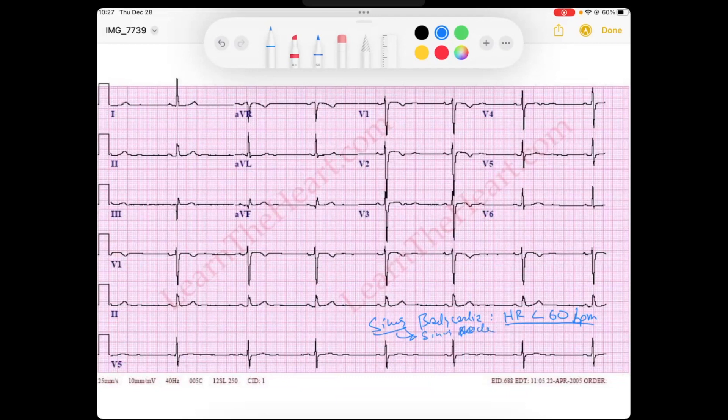Sinus node. So, first of all, I want to just go through this rhythm. So we see these narrow QRSs here. Let's get a rate. You know, they're quite regular. We know the sinus node is a regular node. It does not beat erratically very often.